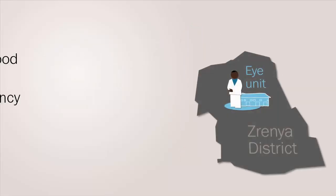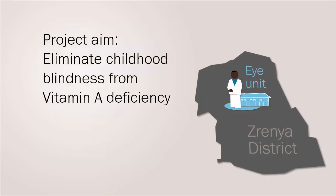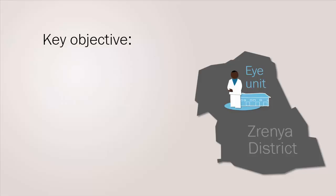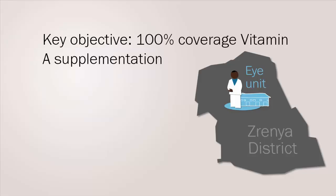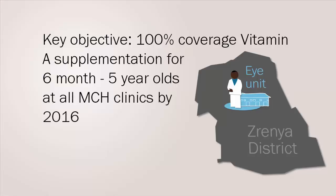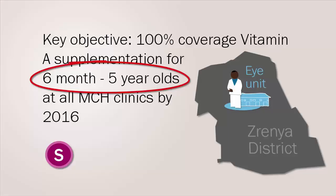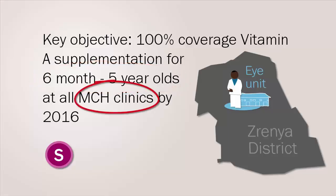For example, the Sirenia district eye care program sets an aim to eliminate childhood blindness from vitamin A deficiency in the district. A key objective of the plan is to have 100% coverage of vitamin A supplementation for six-month to five-year-old children at all maternal and child health clinics in the district by 2016. When we look at this objective, we can see that it is specific about who will receive supplementation and where.